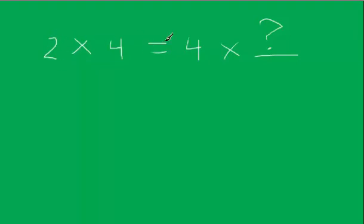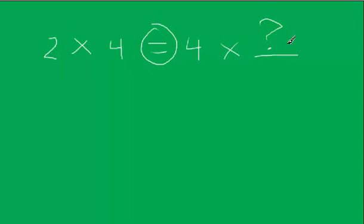Let's try to do 2 times 4 equals 4 times a mystery number. Now right away, if you know how this works, you can see this should be easy because we have the equals sign here — I have to do the same thing on both sides. So right away we could say the answer is 2. 2 and 4, 4 and 2, same thing. So I could put a little 2 right here and that would work.